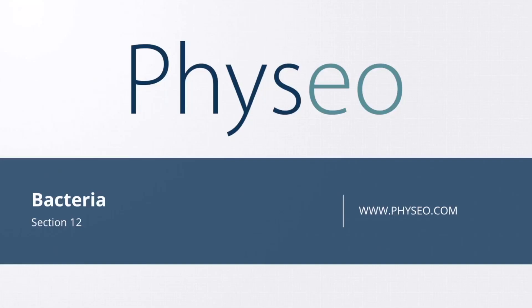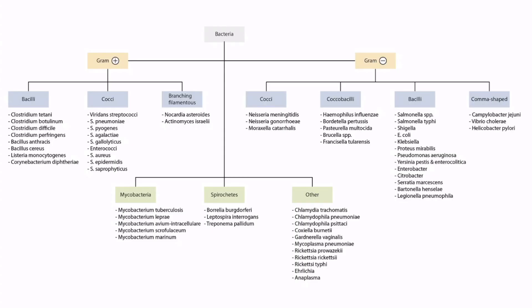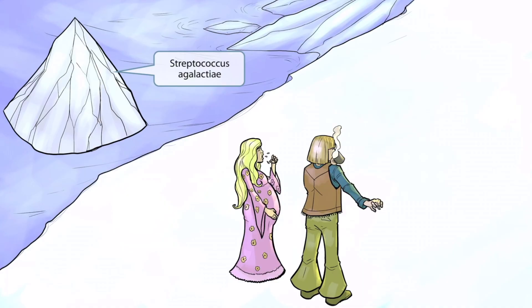Welcome to section 12 of Bacteria. This is our bacteria overview figure, and in this video, we'll be discussing Streptococcus agalactiae. You should know that Strep agalactiae is also known as Group B Strep, or GBS.